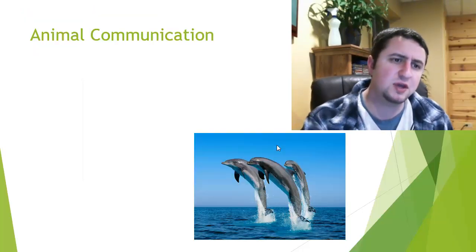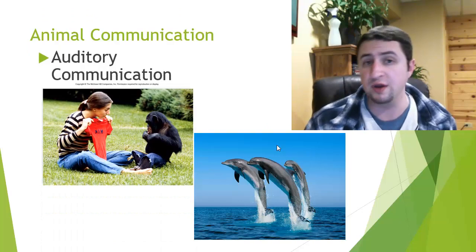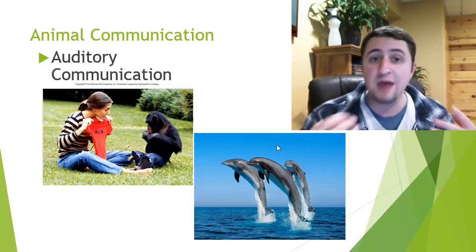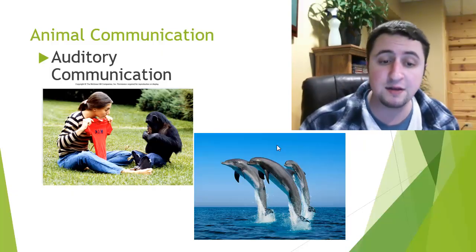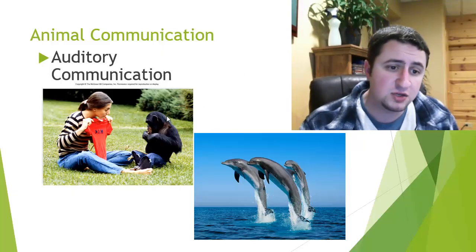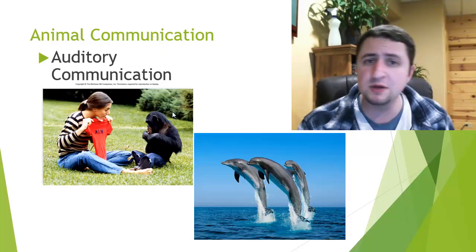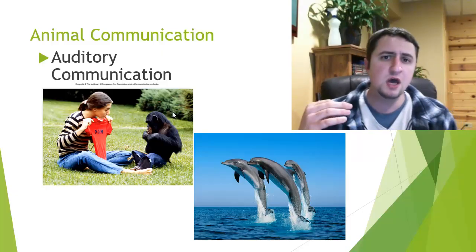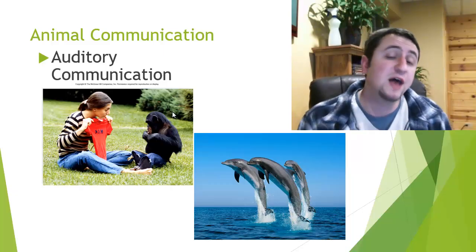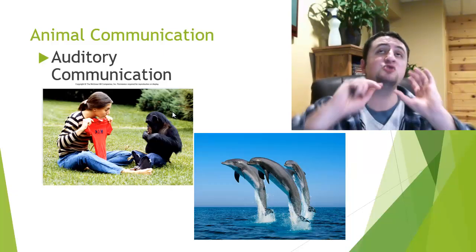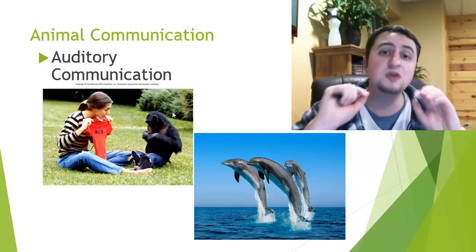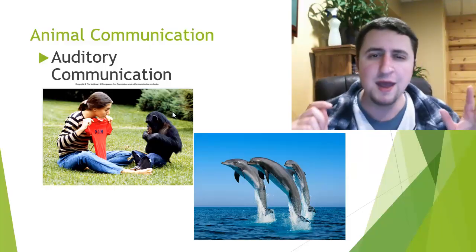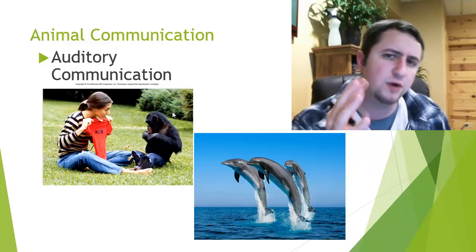Another type of animal communication is auditory communication — speaking with sound and how sound can make another organism act a certain way. Certainly chimps build sort of little societies and they make different sounds depending on what's going on. A lot of organisms also have a distress call where they'll send out a large yelp to alert everybody: hey, watch out.